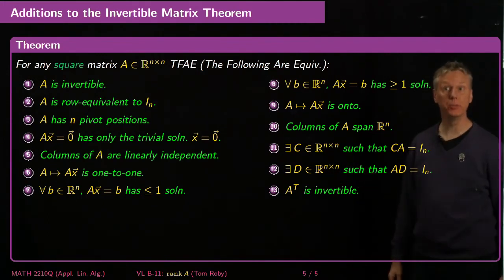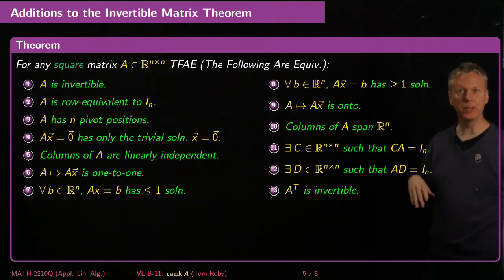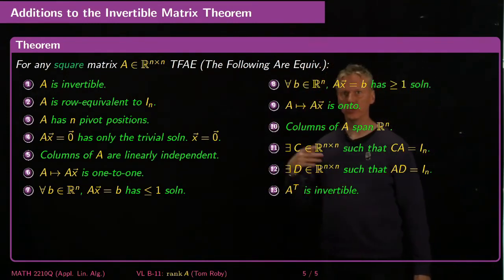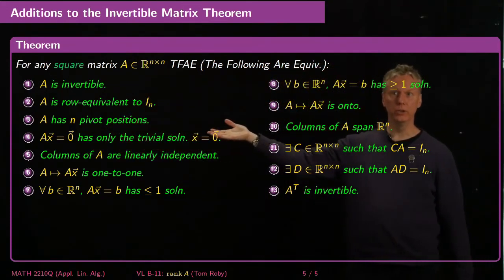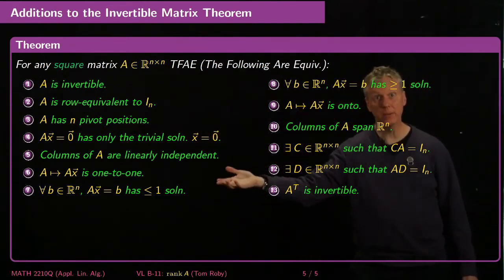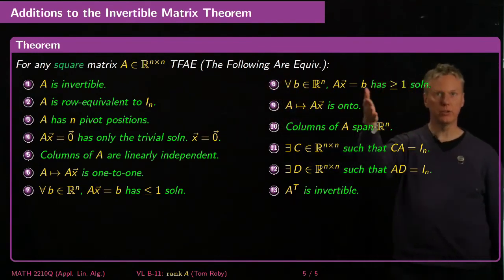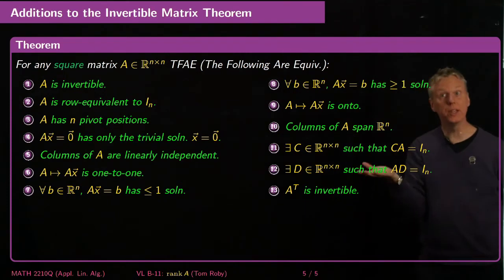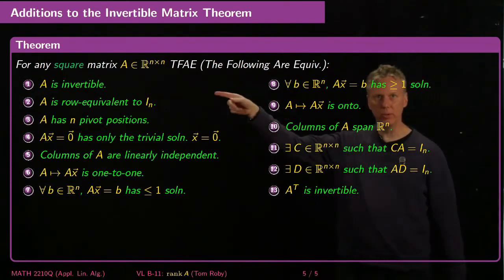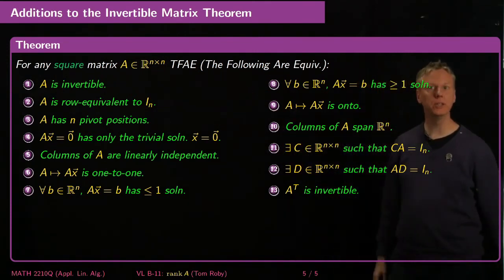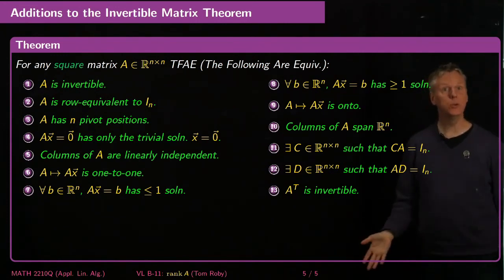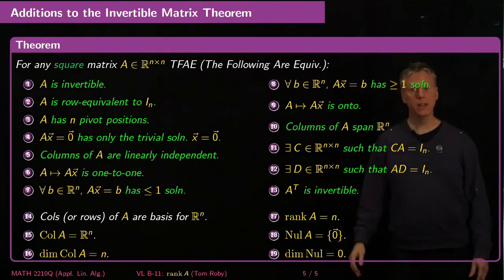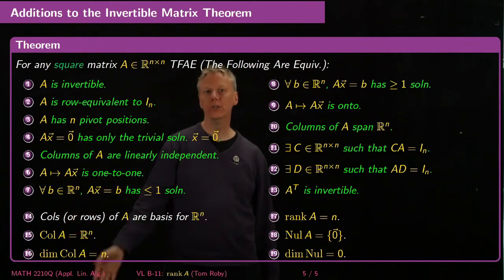I want to tell you quickly about some additions to the invertible matrix theorem. We had that theorem saying that for a square n by n matrix, a bunch of statements are equivalent to the matrix being invertible: row equivalent to the identity, n pivot positions, only trivial solution to Ax = 0, columns linearly independent, columns span R^n, the corresponding linear transformation is onto and one-to-one, the transpose is invertible, and one-sided inverses exist. Now, with the language of column space, row space, and rank, we'd like to add more equivalent statements, and these are mostly easy extensions.